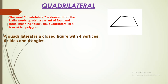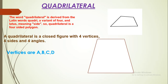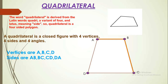Let us have a look at them. This is a quadrilateral and the vertices are A, B, C, D. Let us count 1, 2, 3, and 4 and name them A, B, C, D. Then the sides are AB, BC, CD, DA. Angles are angle A, angle B, angle C, and angle D.